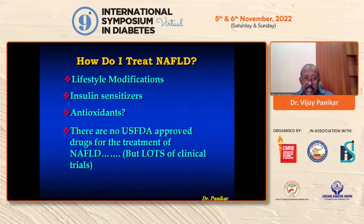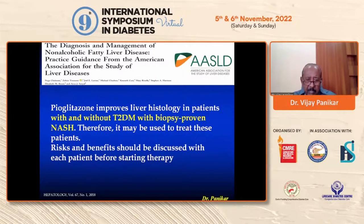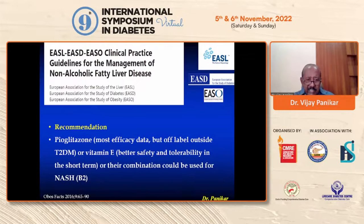How do we really treat NAFLD? We have lifestyle modification, insulin sensitizers, and antioxidants, but as of today there is no US FDA-approved drug for the treatment of NAFLD, though there are many clinical trials with different molecules. The 2018 AASLD guideline states that pioglitazone improves liver histology in patients with biopsy-proven NASH, with or without type 2 diabetes, though risk and benefit should be discussed due to concerns around pioglitazone and bladder cancer. The 2016 AASLD-EASD recommendation notes pioglitazone has the most efficacious data, but is off-label outside type 2 diabetes; vitamin E offers better safety and tolerability; their combination could also be used in NASH.